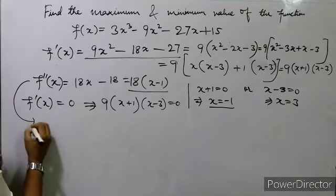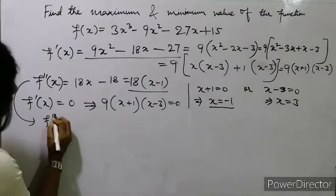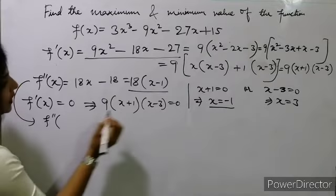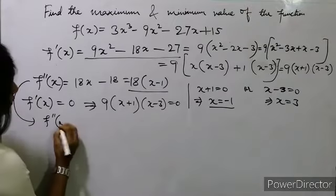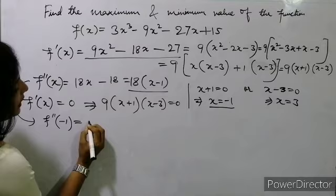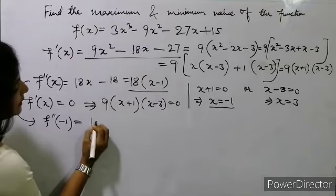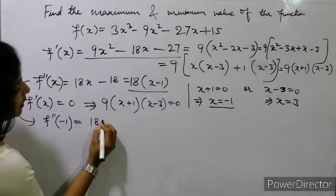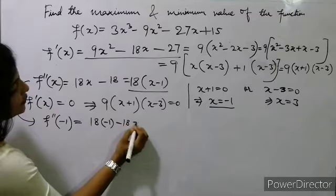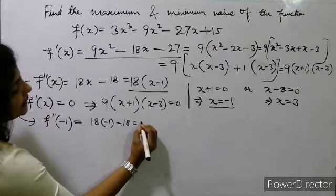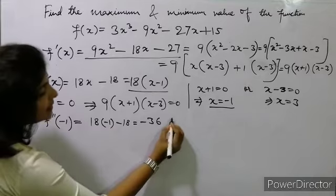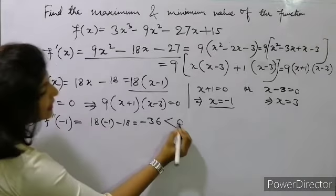First we put x = -1 in f''(x). f''(-1) = 18×(-1) - 18 = -18 - 18 = -36. Since -36 is less than 0, x = -1 gives a maximum.